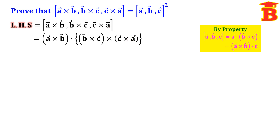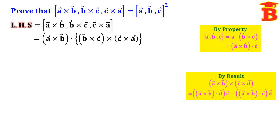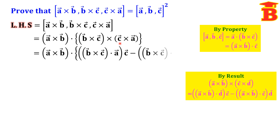Now this is the cross product of four vectors. We have the result: A×B × C×D equals (A×B · D)C minus (A×B · C)D. Using this formula, we can write this as (B×C · A)C minus (B×C · C)A.